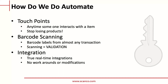How do we automate? Touch points are anything — anytime someone interacts with an item. From the time a raw good comes in to the time a finished good ships out, if someone's touching it or that product's moving, we want to scan, look up, key in, or have some kind of touch point on that item. This is going to cause us to stop losing track and stop losing product. If we're doing a transfer, we want to scan. If we're shipping something out, we want to scan. These touch points are very important for keeping real-time and accurate inventory levels.